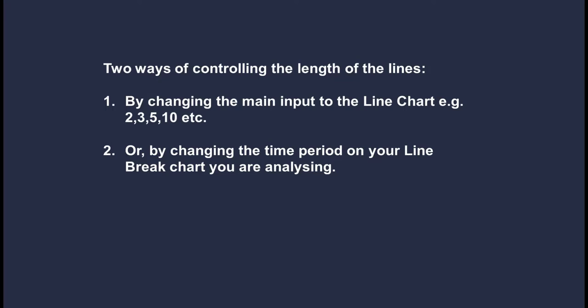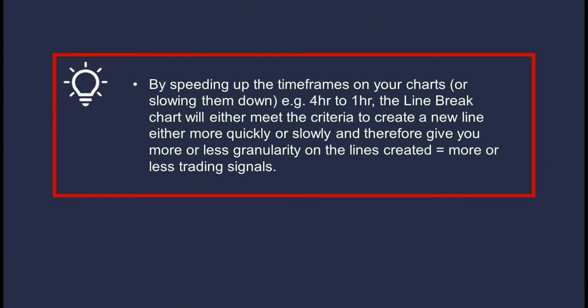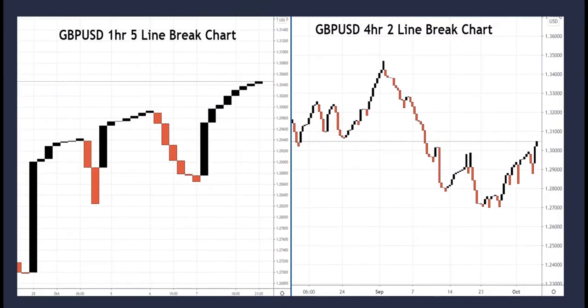Secondly, we can impact the length of the lines by changing the time period on your line break chart. A tip: by speeding up or slowing down the time frames — for example moving from a four hour to a one hour chart — the line break chart will either meet the criteria to create a new line more quickly or slowly, giving you more or less granularity on the lines created and therefore more or fewer trading signals. By manipulating the time inputs you can create different strategies for trading the same asset.